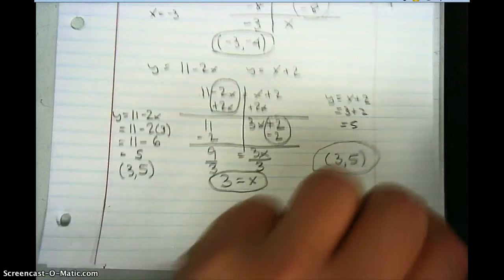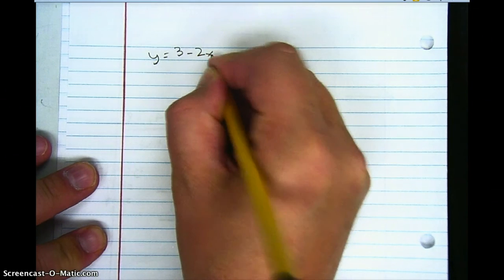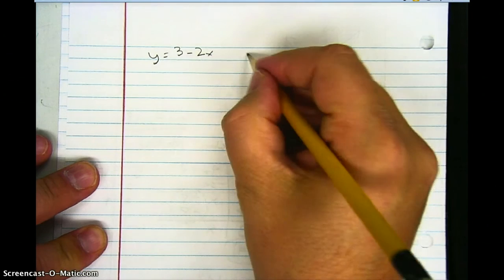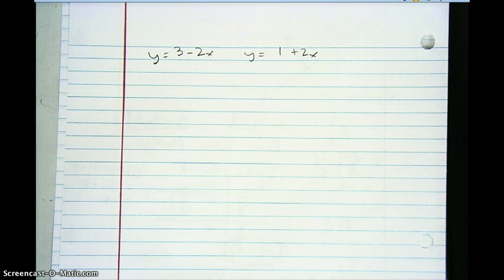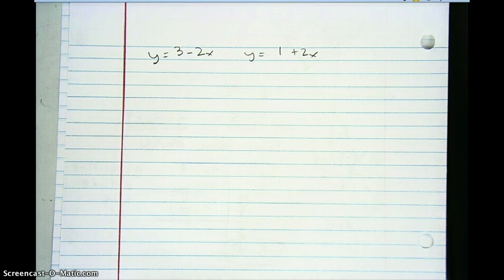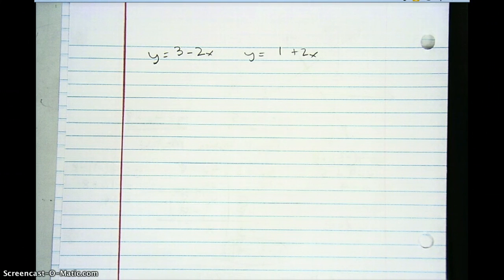Now I want you to solve one more. The two equations are y equals 3 minus 2x and y equals 1 plus 2x. Pause the recording and try to solve it using the equal values method. After you solve for x, plug your x value back in to find y as well.